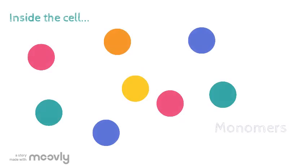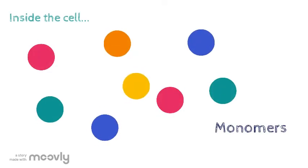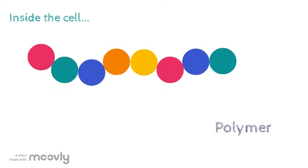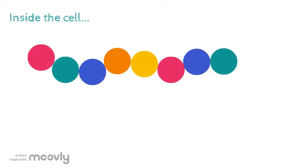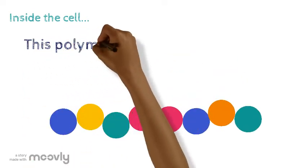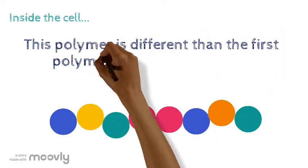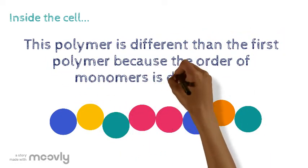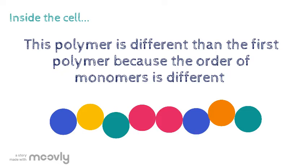Once the monomers are inside the cell, they're normally built back into polymers. Monomers are like building blocks. They can be put together to build complex polymers, taken apart, and rearranged to build a different complex polymer. This means that the polymer that they make in one cell might be different than the polymer they were before they were digested.